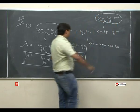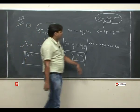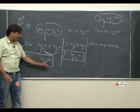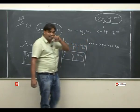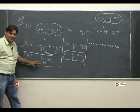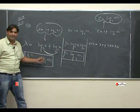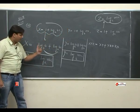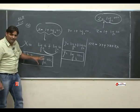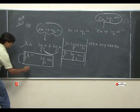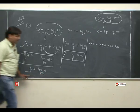तीनों में number abc same है लेकिन base different है। यदि base same बनाना है तो log को पलट देते हैं: 1/x = log a base (abc), 1/y = log b base (abc), 1/z = log c base (abc). तो three reciprocals with same base abc मिल गए।